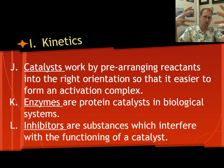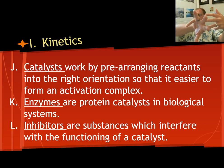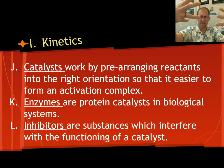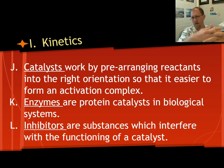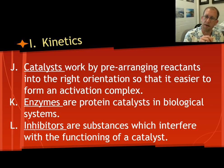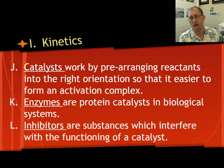So catalysts work by prearranging reactants into the right orientation so that it's easier to form an activation complex. If this molecule has to hook up with this molecule, in the wild world, they might bump into each other this way. That doesn't help you, but a catalyst might take them and stick them in the right orientation and then allow them to collide so the reaction can happen. Enzymes are a particular kind of catalyst. They're in biological systems and they're made out of proteins. An inhibitor is something that gets in the way of a catalyst. So a catalyst is there doing its job, making reactions, and then an inhibitor comes in and it can't do what it's supposed to do. It stops the functioning of a catalyst.